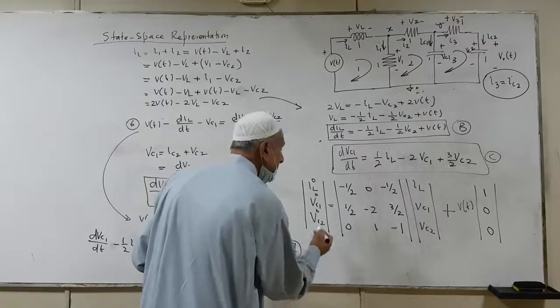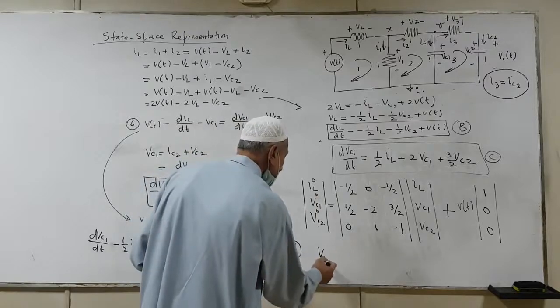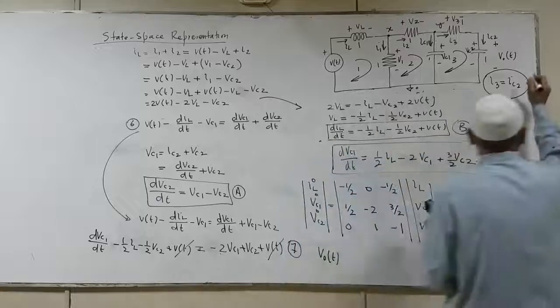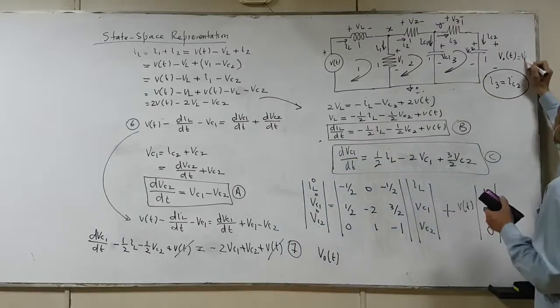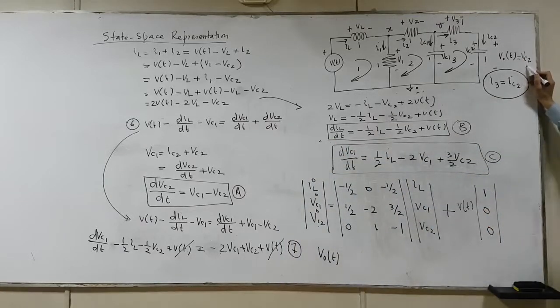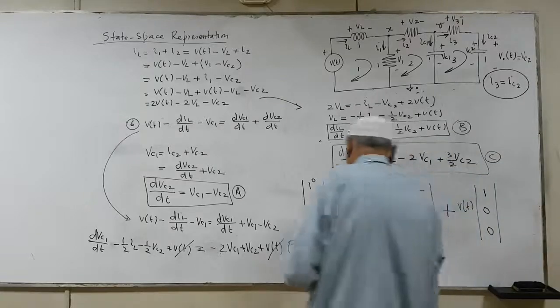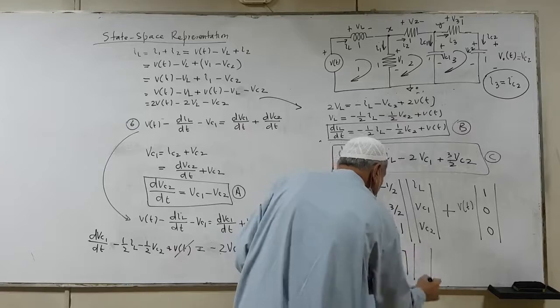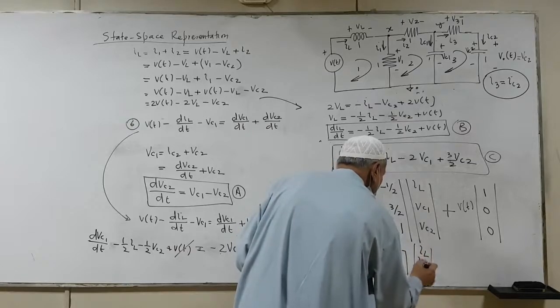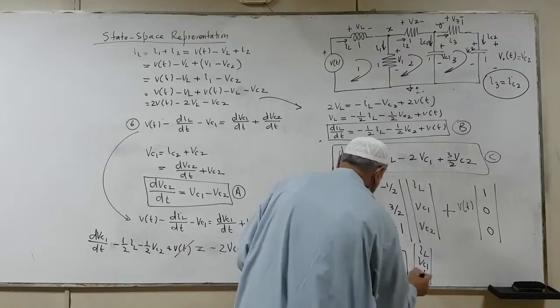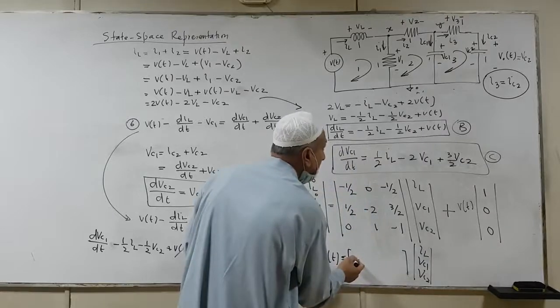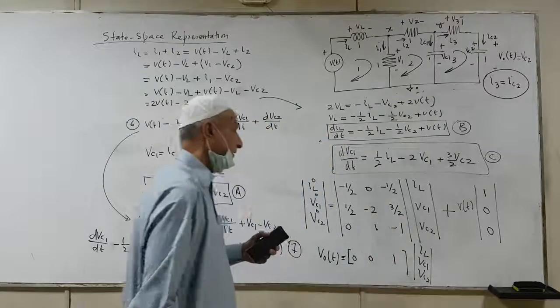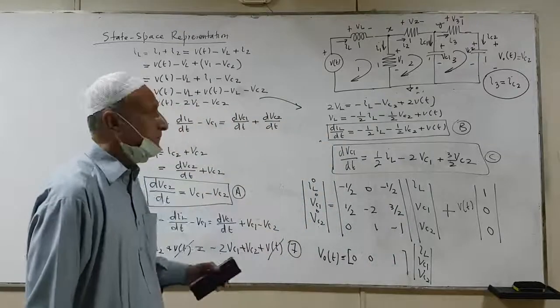Output, in this case, is actually the capacitor voltage. So the capacitor voltage output is directly equal to Vc2, which is the state variable in fact. But over here, we have to form this one as a row vector. So we have again a column vector which consists of IL, Vc1, and Vc2. So we have IL, 0, Vc1, 0, and Vc2, 1. So this completes the state space representation.